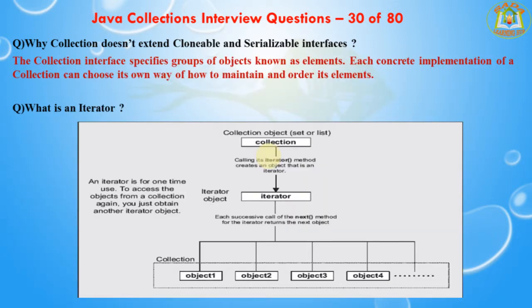The first question is: why doesn't Collection extend Cloneable and Serializable interface? The Collection interface specifies a group of objects known as elements. Each concrete implementation of a collection can choose its own way of how to maintain and order its elements. Some collections allow duplicate keys while some others don't. The semantics and implications of either cloning or serialization come into play when dealing with actual implementations.